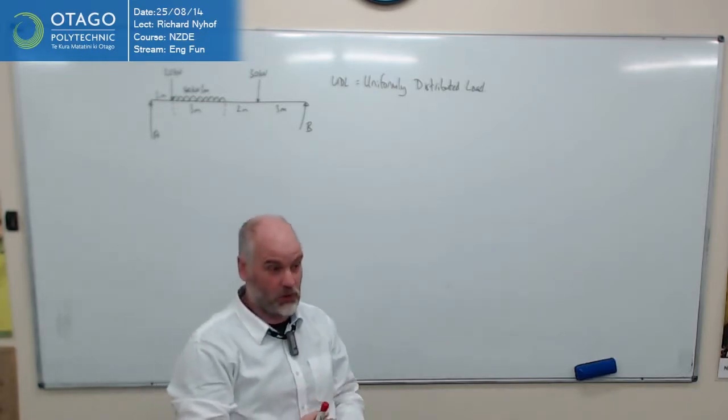And the way to work it is just to imagine that there's a point load in the middle. So this whole UDL, we can replace with a single force of 120 kN acting one and a half metres, halfway in the UDL. Yeah, okay. So 40 times three. So 40 kN per metre for three metres, 120.